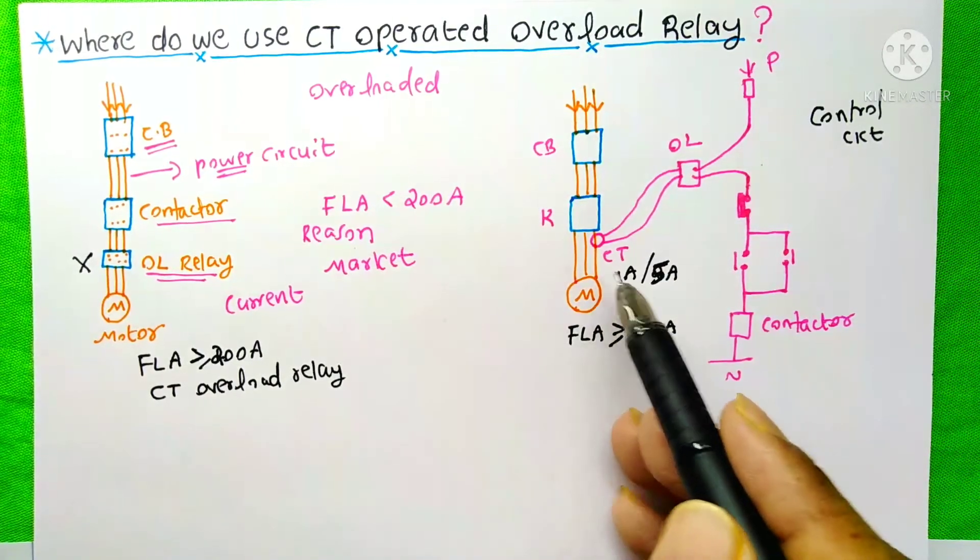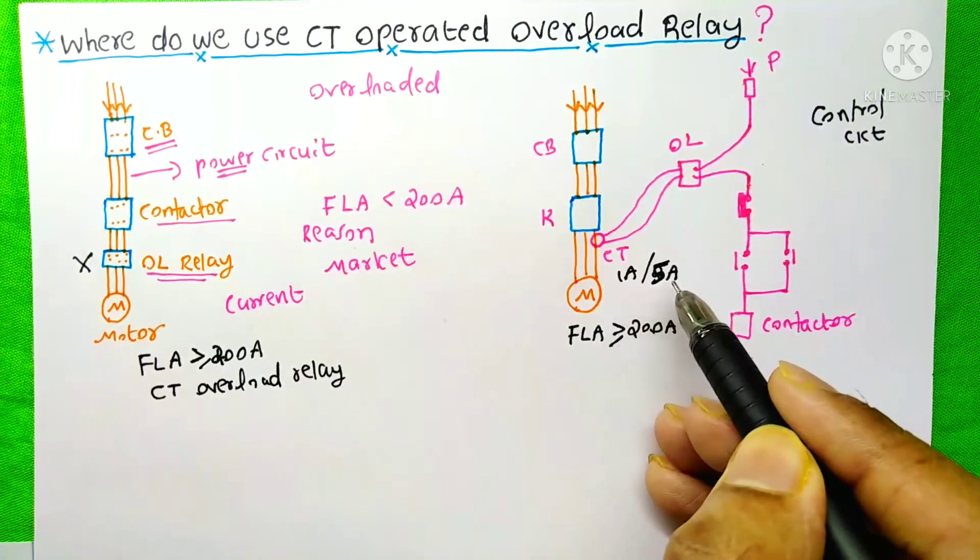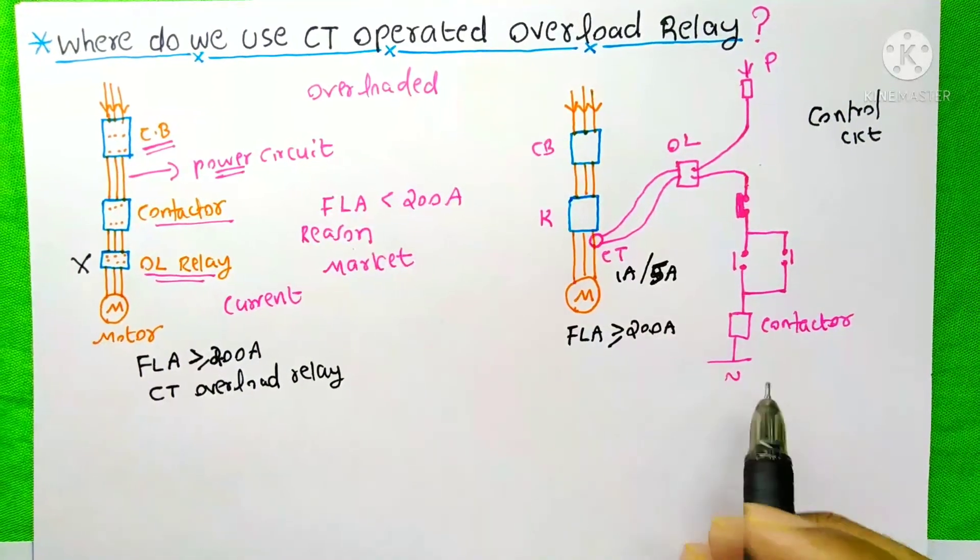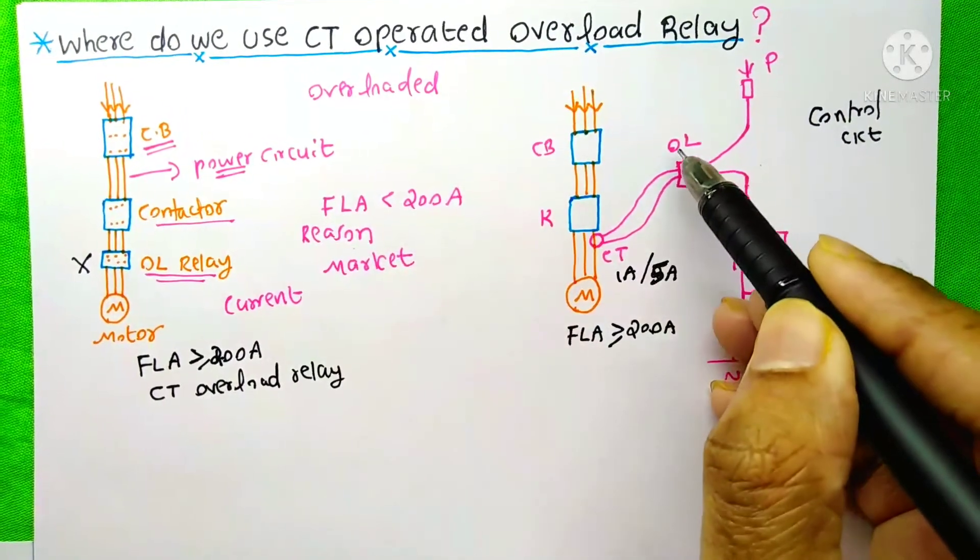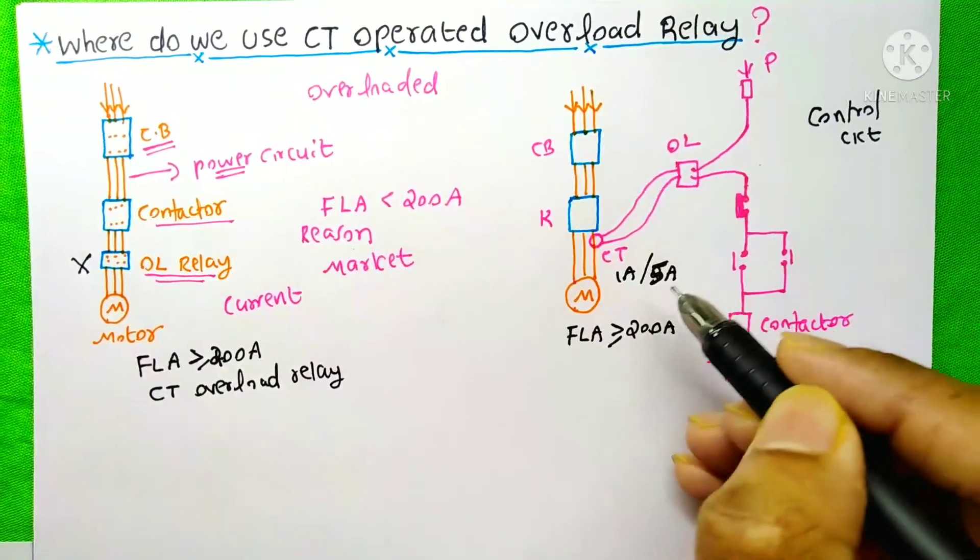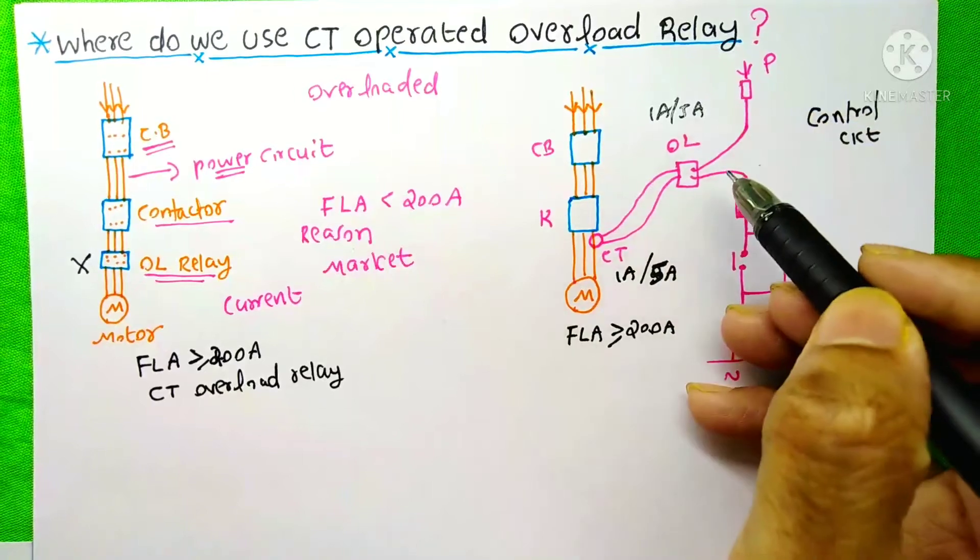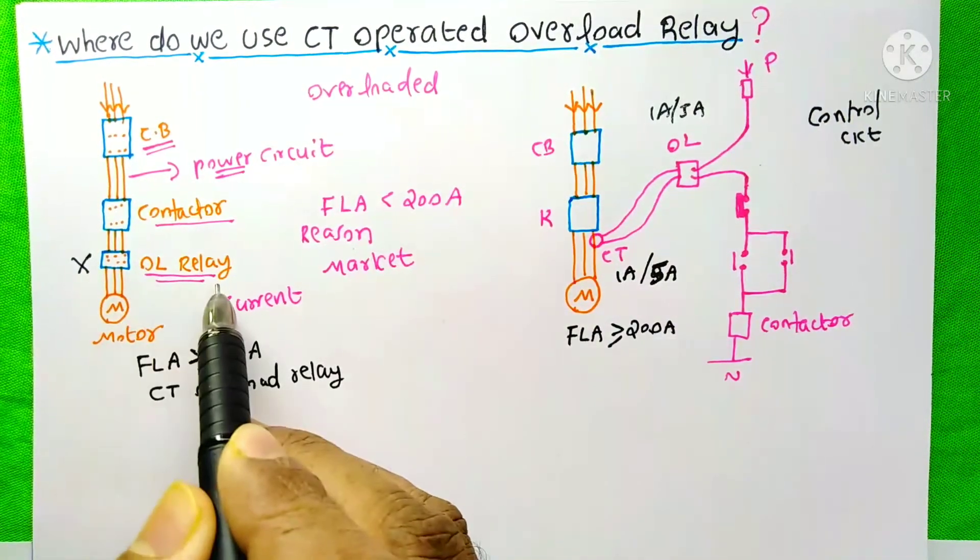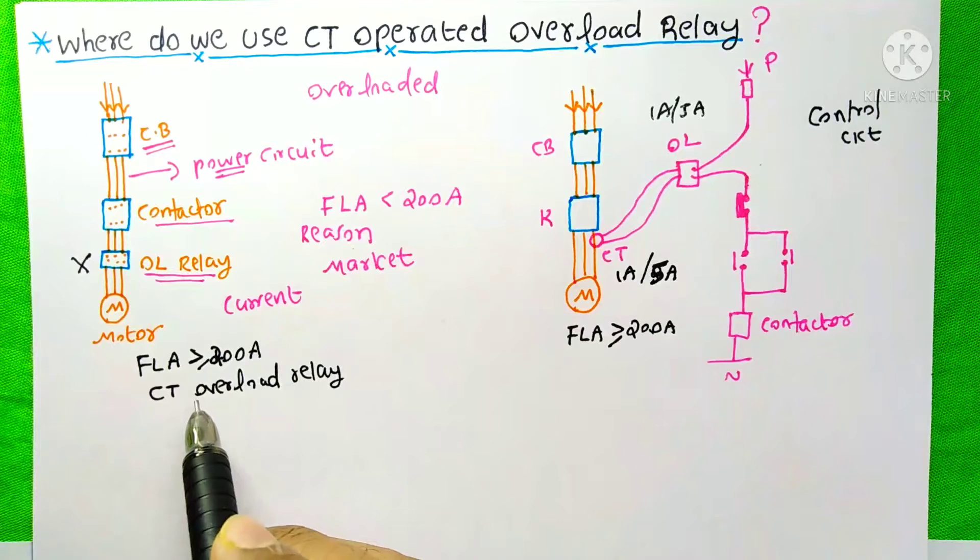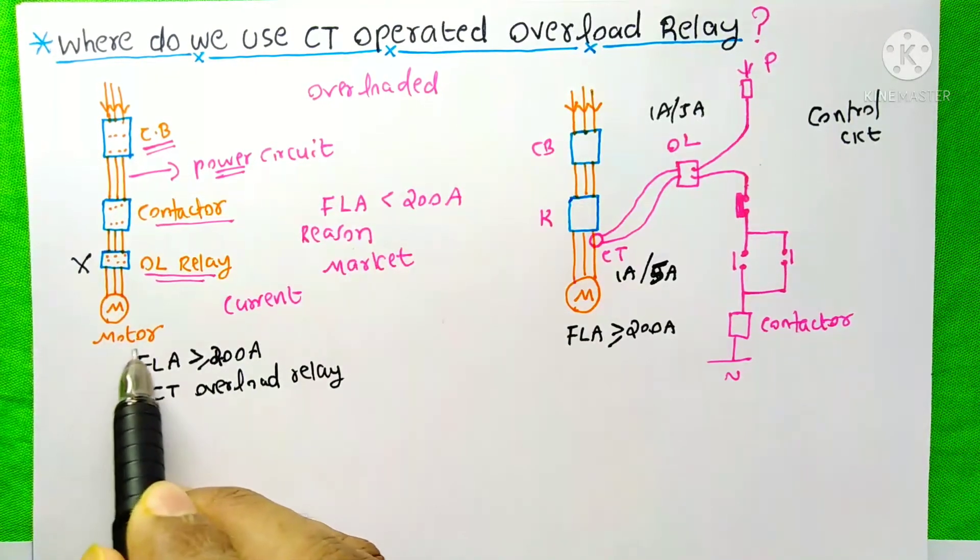This CT's secondary current may be 1 ampere or 5 ampere. Here we need to give an overload relay in the range of 1 ampere or 5 ampere, it's enough. But in this case, this overload relay must be a range of full load ampere of this motor.